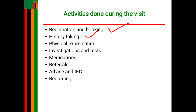Under obstetric history you also find out about menstrual and contraceptive history. You ask about the age at menarche, the type of cycle — whether regular or irregular — its duration, whether it exceeds five days, and whether the flow is reduced, normal, or heavy. You also ask about any method of contraception used, for how long, and the reasons for stopping.